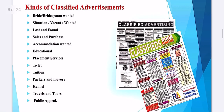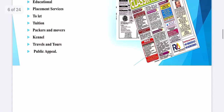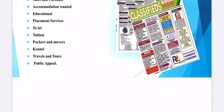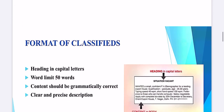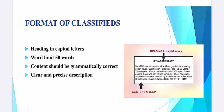There are different kinds of classified advertisements: bride and bridegroom wanted, situation vacant, situation wanted, lost and found, sale and purchase, accommodation wanted, educational, placement services, to-let, tuition, packers and movers, travel and tours, and public appeal. You can see in this cutting how they are placed in a newspaper. Please copy down the 'situation vacant' advertisement as shown in this slide.